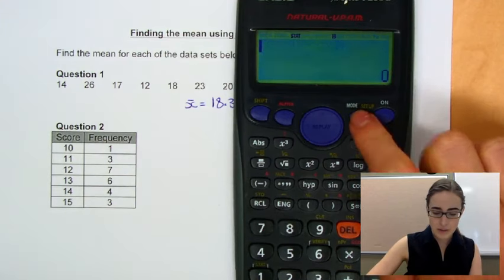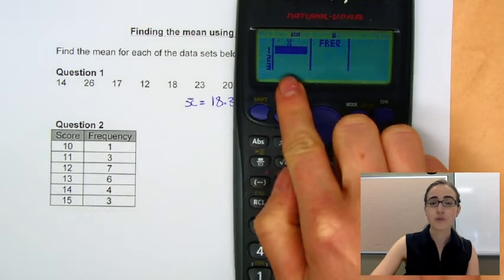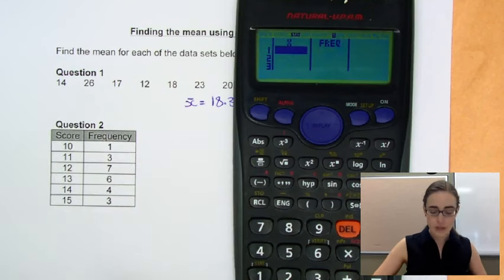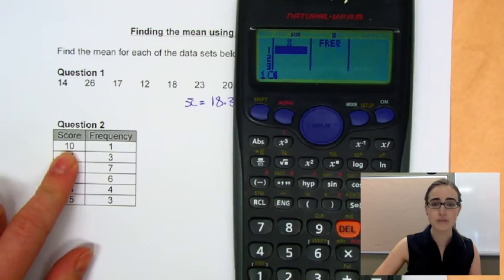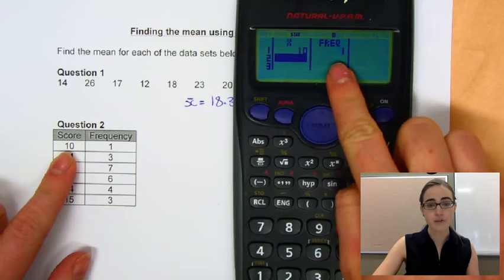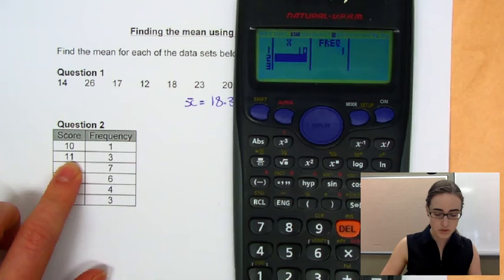So now if we pull our table up again, mode 2, 1, we now have our score column and our frequency column, which looks like our table here. So we can enter it in. So our first score is 10. So we'll type 10, press equals, and it enters a 10. Now it automatically puts a frequency of 1 for all of our scores, which is fine for the 10 because that's the right frequency. But for the others, we'll go and change it.